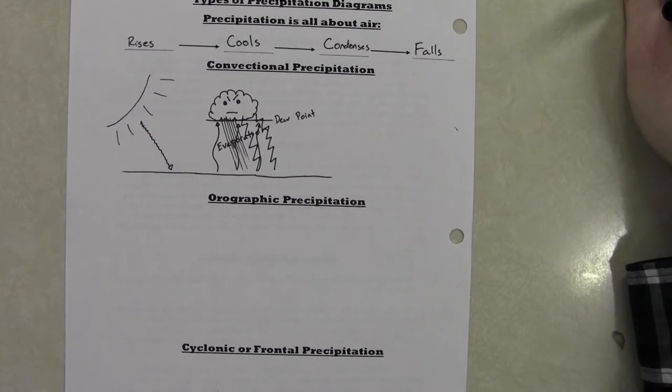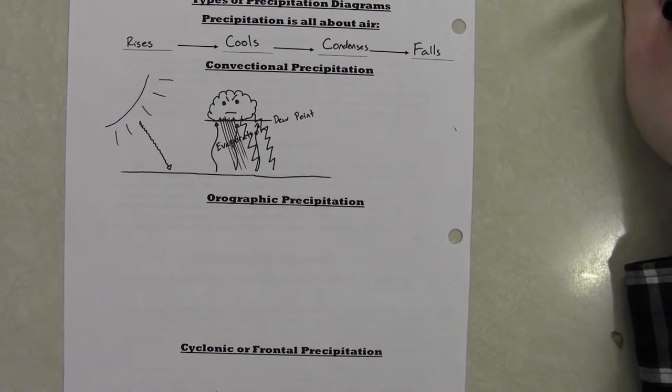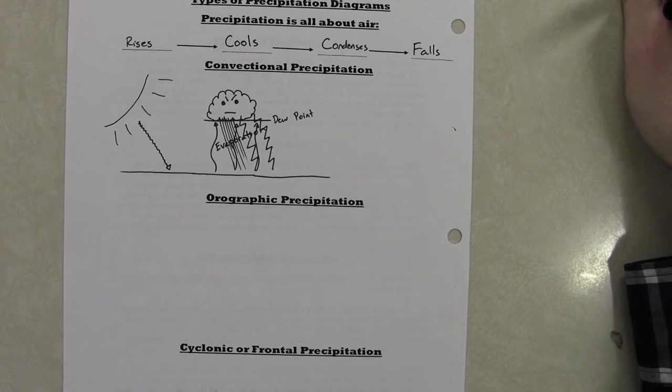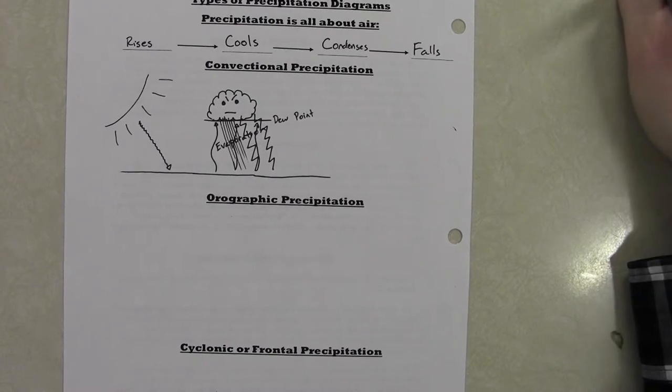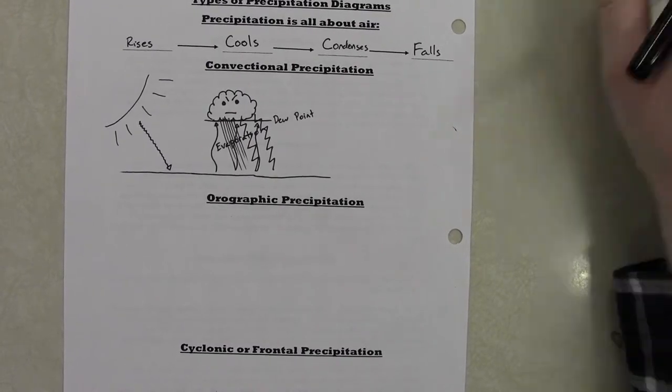Afternoon thunderstorms. You go outside at 2 o'clock, it is beautiful outside. By 4 o'clock, holy cow, the sky is black, and you get poured on for a couple of hours. And then it should be somewhat back to normal. If it's not back to normal, the same pattern will probably happen tomorrow.